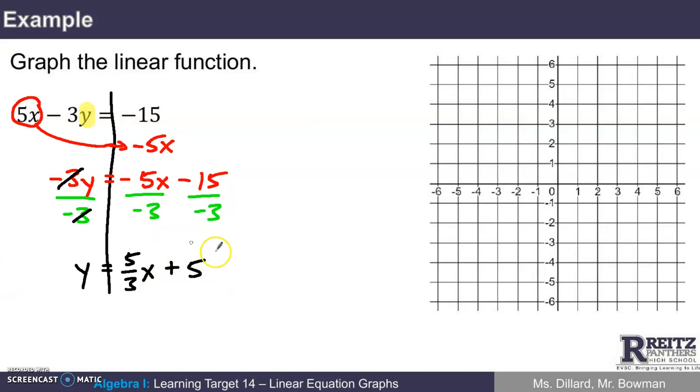And what I have now is that equation in slope-intercept form. So now I can graph it by identifying the slope. Here the slope is 5 thirds, and the y-intercept is positive 5. I can graph this like we did at the beginning of learning target 14.